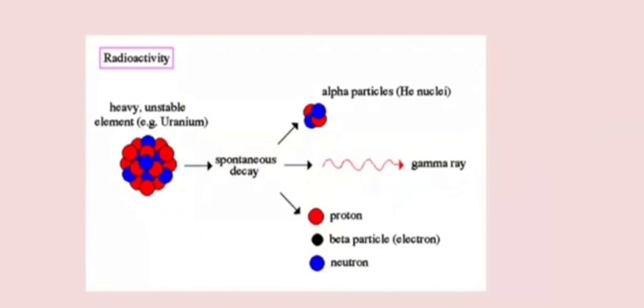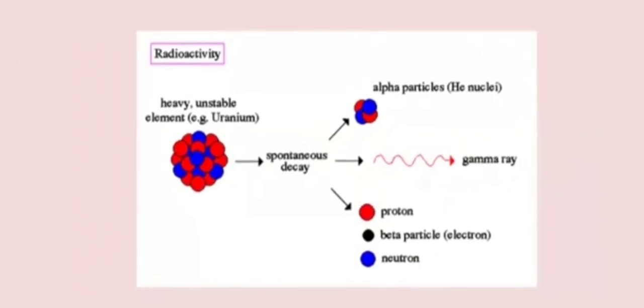Looking at the picture, this is a uranium nucleus — it is heavy and unstable. It attains stability by spontaneously emitting radiations like alpha particles, gamma particles, protons, beta particles, neutrons, etc. This process is called radioactivity.